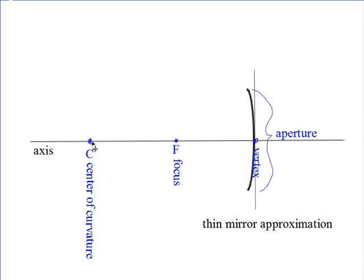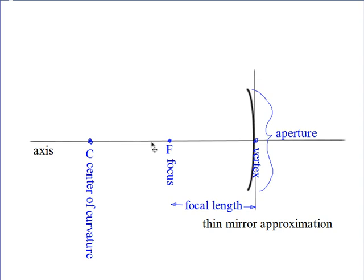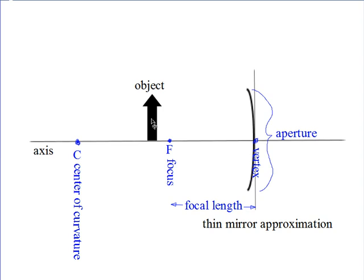All distances are measured from the vertex. The radius of curvature runs from the vertex to the center of curvature. The distance from the vertex to the focus is known as the focal length. The center of curvature is twice the focal length away from the vertex. We represent the object — which could be a tree, a person, a dog, anything the light comes off of — with an arrow. Its base is placed on the axis.